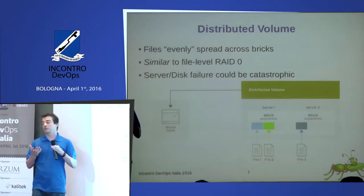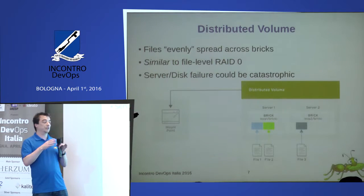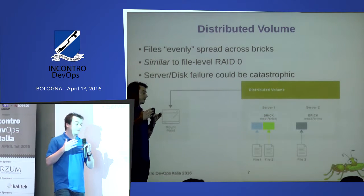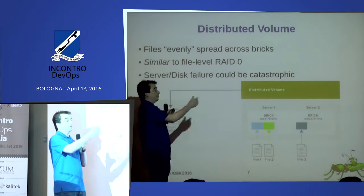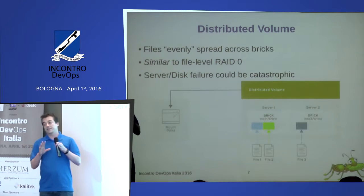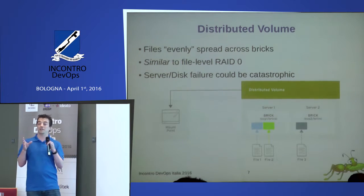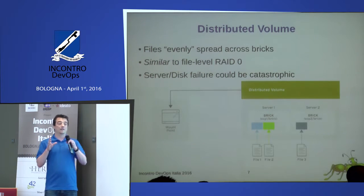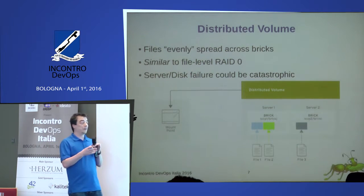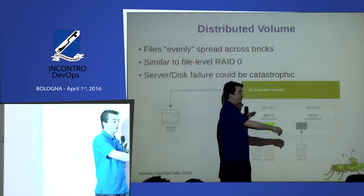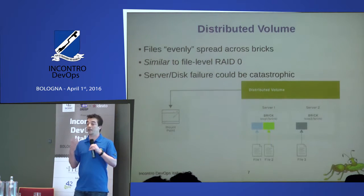There are some tweaks to the algorithm — for example, if you have a file called 'readme,' you don't want all files called readme on the same server. So the algorithm uses the directory depth and other factors so that a readme in the root directory and a readme in a subdirectory go to different bricks. The principle is: take a hash of something you know (the file name), hash it to a known value, and the client knows the hash ranges for each brick, so it always knows which server contains the file.